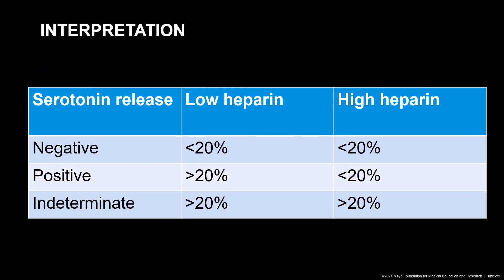Interpretation of the Mayo Clinic serotonin release assay is based on a cutoff of 20 percent serotonin release. Less than 20 percent serotonin release is a negative test result. Greater than 20 percent serotonin release which is inhibited by high dose heparin is a positive test result. On occasion, there will be patients with antibodies that release serotonin at greater than 20 percent; however, this release is not inhibited by heparin, meaning at a high heparin level, serotonin release is still greater than 20 percent. This is categorized as an indeterminate test result and is not classical for heparin platelet factor IV platelet-activating antibodies.